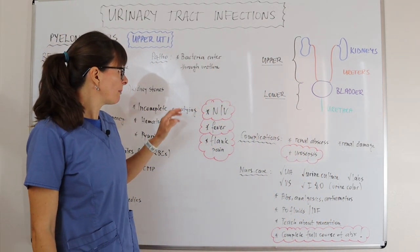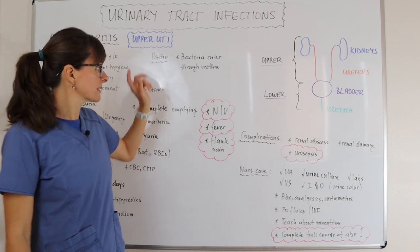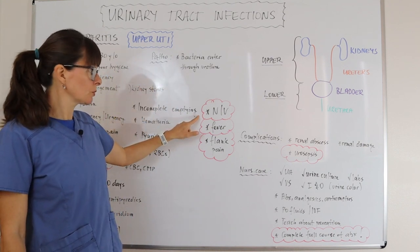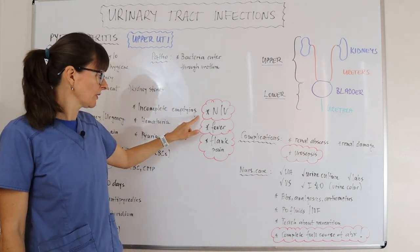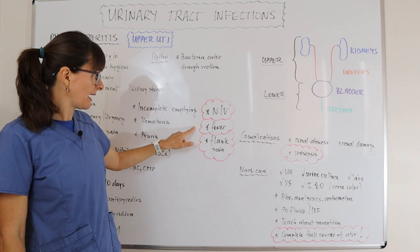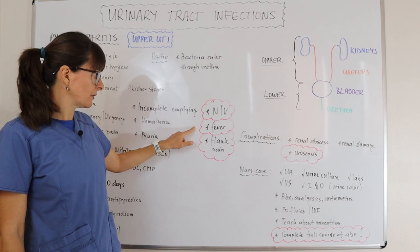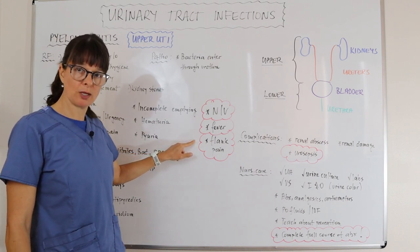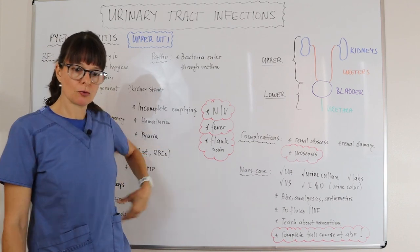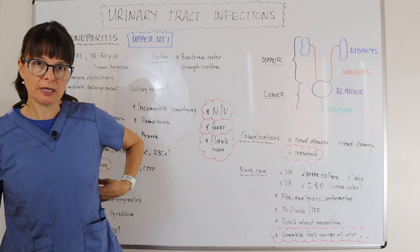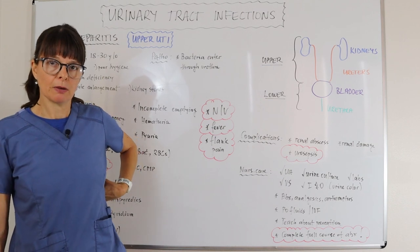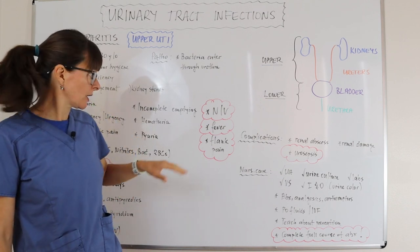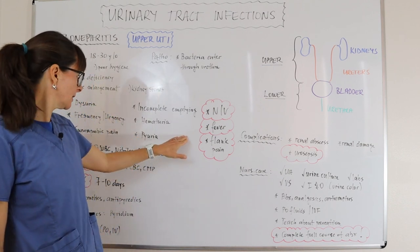For pyelonephritis, in addition, the patient will usually have nausea and vomiting. They might have a fever and/or flank pain — meaning pain at the bottom end of the rib cage in their back.